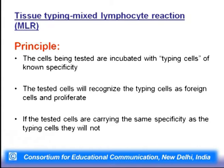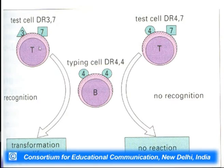In tissue typing or the mixed lymphocyte reaction, HLA is the human leukocyte antigen present on WBCs. Cells being tested are incubated with cells to be typed. Once they recognize the foreign cells and proliferate, they carry the same specificity to that foreign type — recognition leading to transformation and proliferation. If there is no recognition, there is no proliferation and no reaction, meaning there is a chance of graft acceptance. If there is a reaction, there is a 100% chance of the graft being rejected.